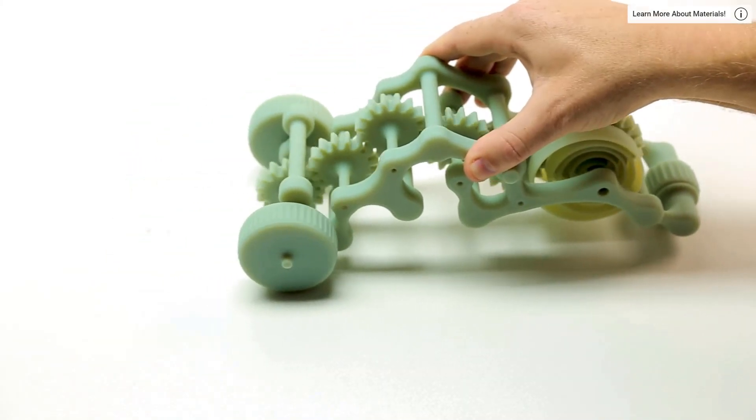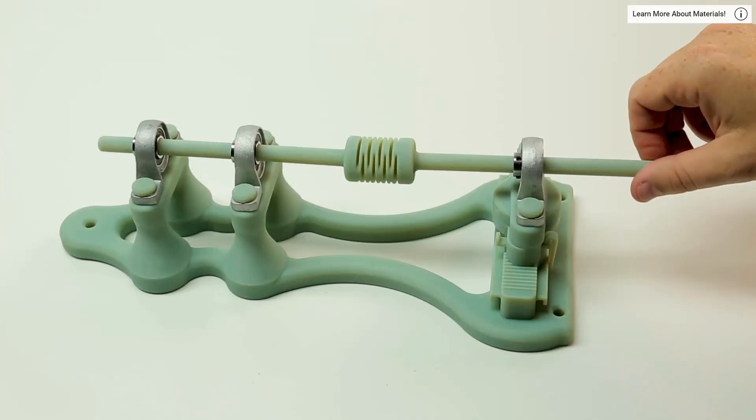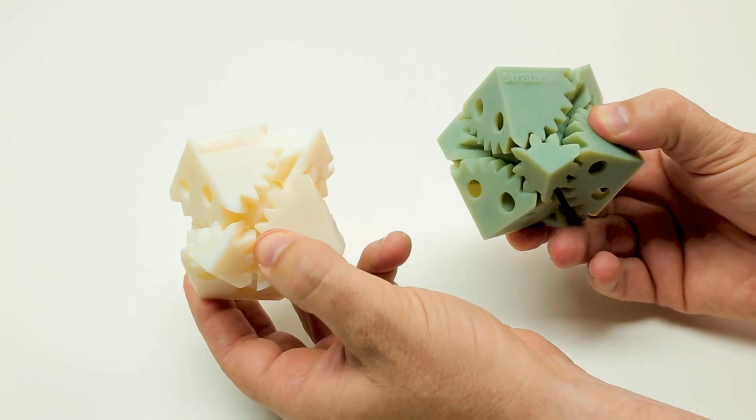Introducing Digital ABS Plus, a new PolyJet digital material. The material comes in two color versions: green and ivory.